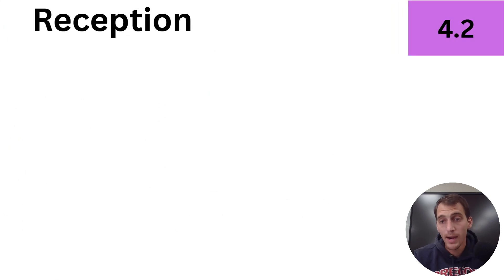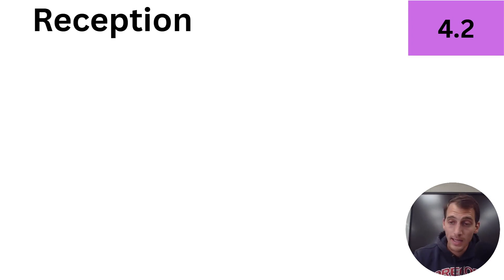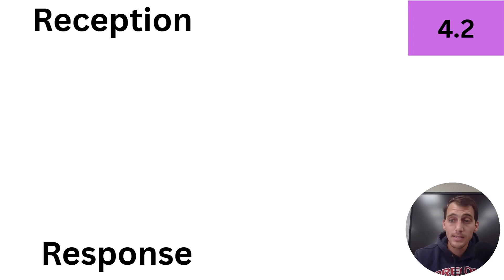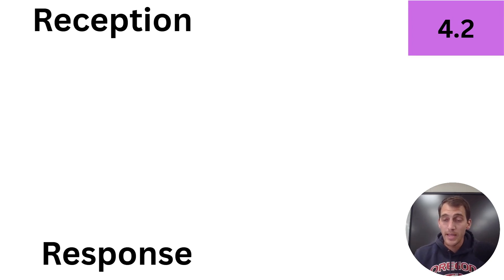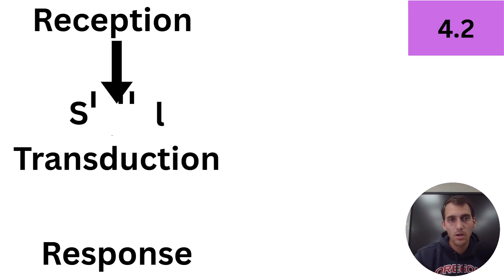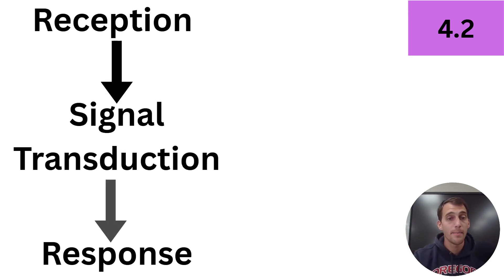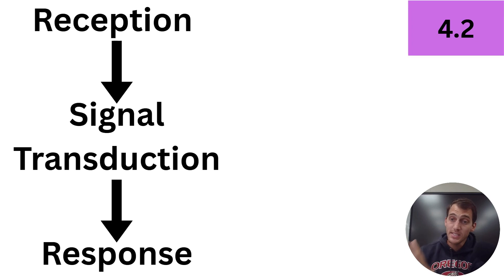That's what we're going to be looking at today. As we looked at in our last topic, cells can receive signals in several different ways — from direct contact, over a short distance, or over a long distance. And as a result of receiving that signal, they cause a response. Cells need to be told what to do. For example, liver cells, when they receive a signal called insulin, insulin will force some of those cells to take in glucose from their bloodstream, and the absorption of glucose from the bloodstream is the response.